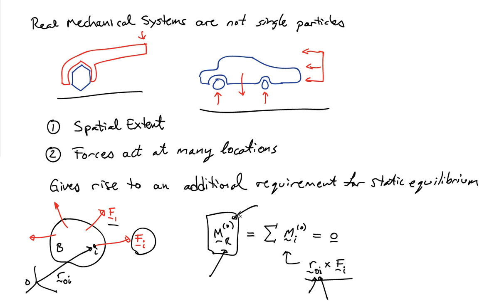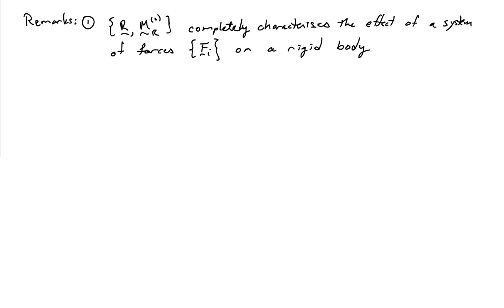These are two reminders from elementary physics: the first requirement on the resultant force comes from Newton, and the second on the resultant moment is due to Euler. Importantly, the resultant force R and the resultant moment M_R together completely characterize the effect of any system of forces on a rigid body. If you can calculate both, you can compute everything needed about the dynamics or motion of a rigid body.